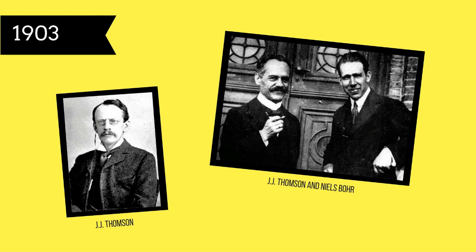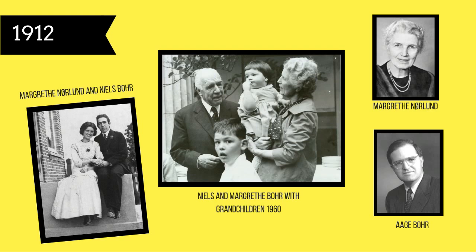In 1912, the following year, Bohr wed Margaret Nørland. They would have six children; four survived to adulthood, and one would become a well-known physics scientist as well.